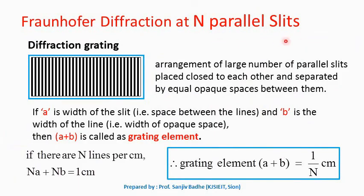An arrangement of N number of parallel slits is called a diffraction grating. Diffraction grating is nothing but an arrangement of N number of parallel slits placed very close to each other and separated by equal opaque spaces between them.